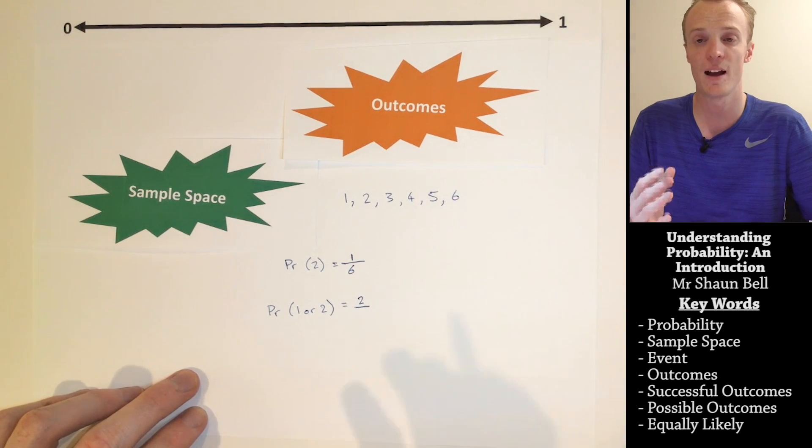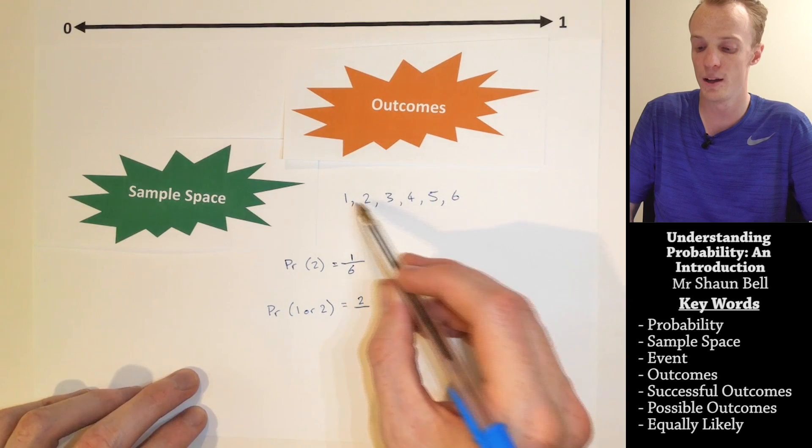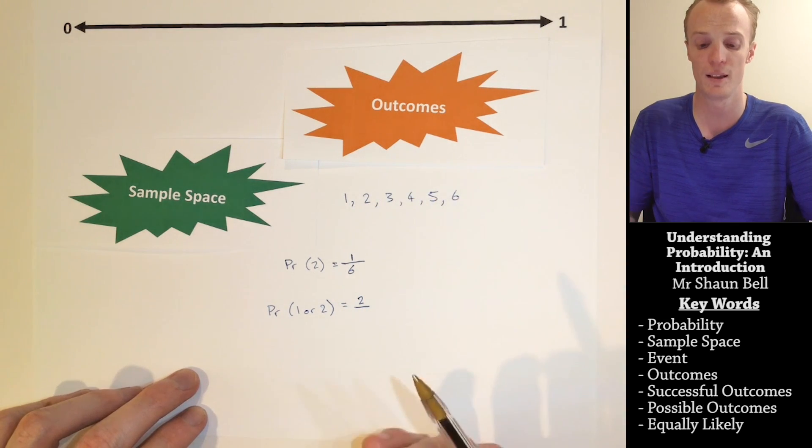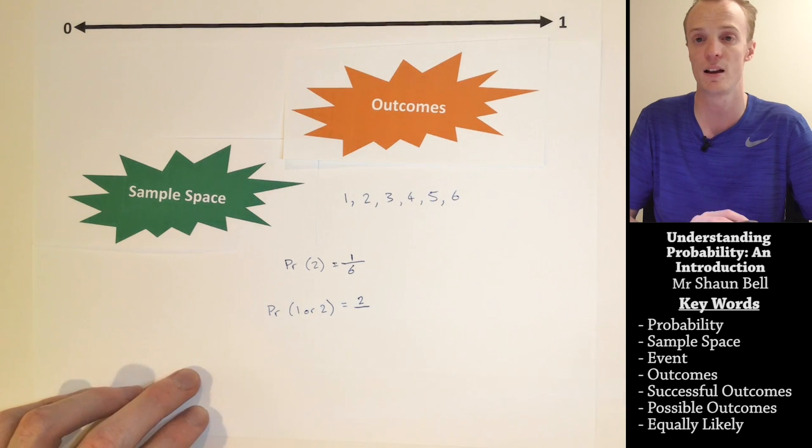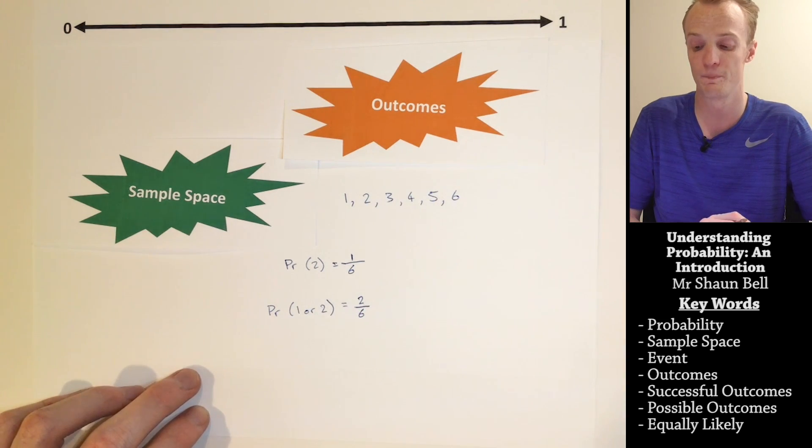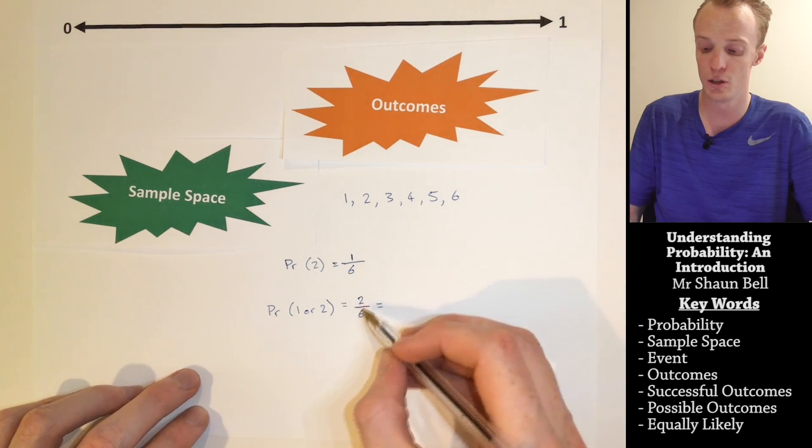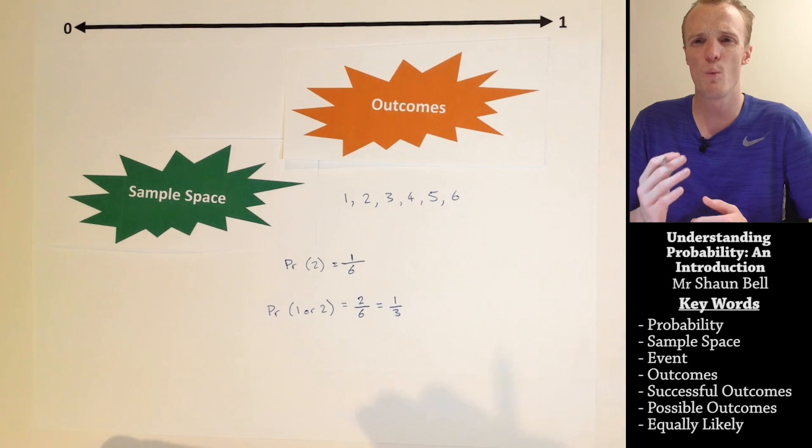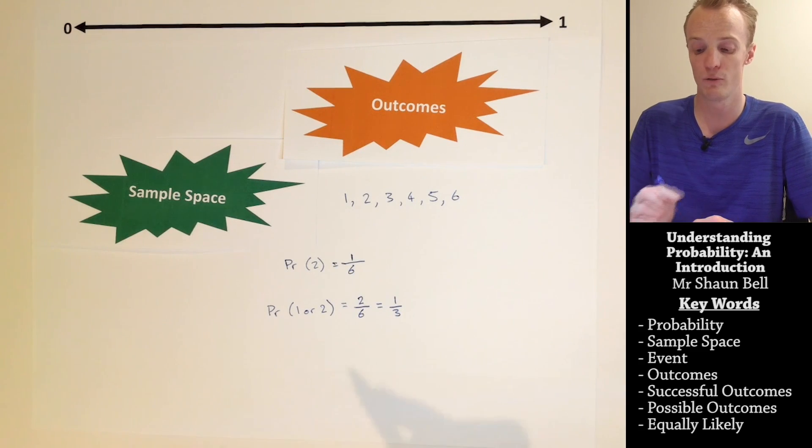Now, we count how many outcomes there are. There are 1, 2, 3, 4, 5, 6 total possibilities or total outcomes in our sample space. And that 6 is represented on the bottom of the fraction. We then simplify the fraction if we can. So, 2 out of 6 is the same as saying 1 out of 3. So we've got a 1 in 3 probability of rolling either a 1 or a 2 on this dice.